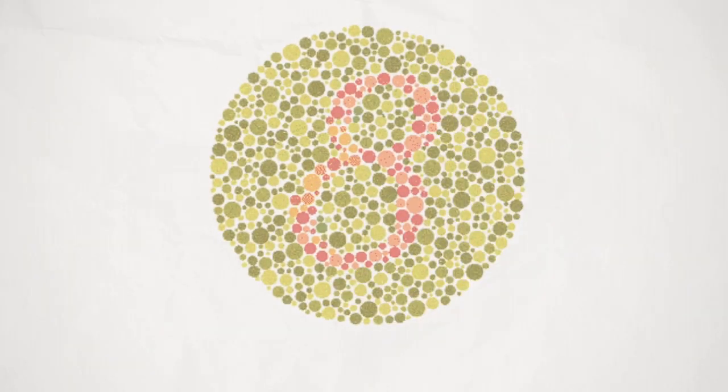Here's the first Ishihara colorblind test checking for red-green colorblindness. Sit two feet away from your screen and look at the wheel in the middle. Do you see the number 8? If you have red-green colorblindness, you see the number 3 instead, because your eyes have trouble distinguishing certain colors.